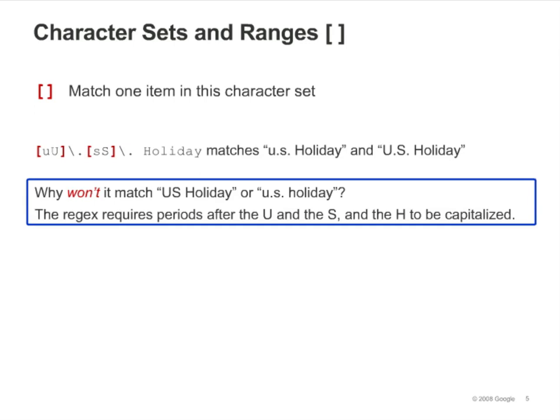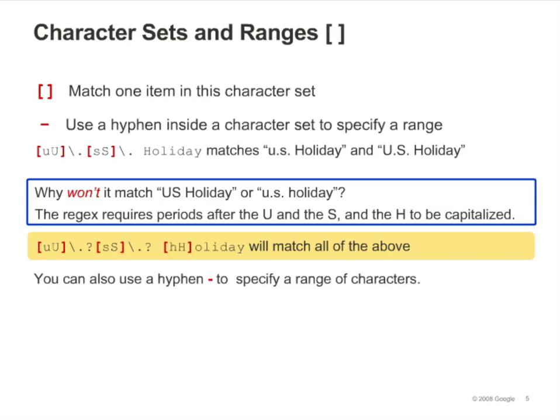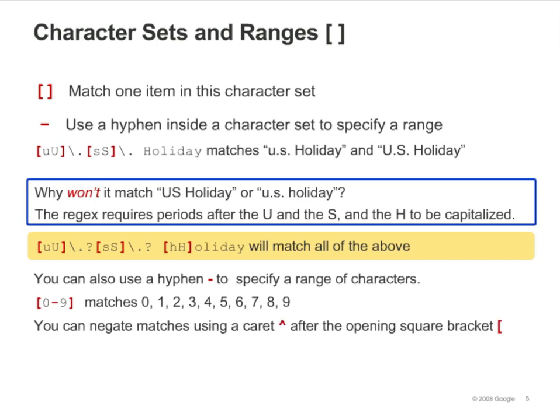There is a regex you can write to match all of these variations. You can either individually list all the characters you want to match, or you can specify a range. Use a hyphen inside a character set to specify a range — so instead of typing [0123456789], you can type [0-9]. You can also negate a match using a caret after the opening square bracket: [^0-9] will exclude all numbers from matching. Note that the caret used here is specific to character sets, and the negating behavior occurs only when the caret is used after the opening square bracket.